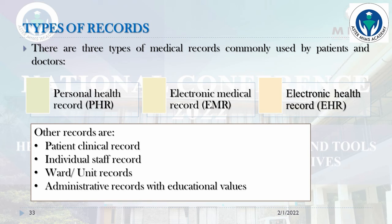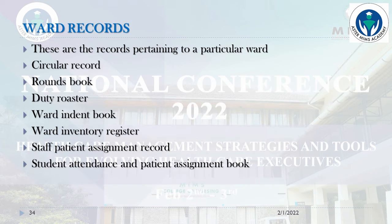Types of medical records: there are three main types — the personal health record, the electronic medical record, and the electronic health record. Other records available in the hospital include the patient clinical record, individual staff record, ward or unit records, and administrative records. Ward records include a circular record that circulates among staff, a rounds book, the duty roster, ward indent book, ward inventory register, staff-patient assignment record, and student attendance and patient assignment book.